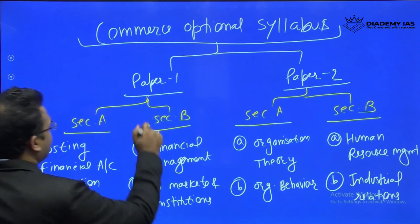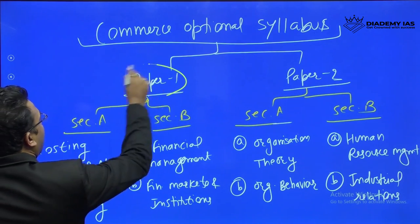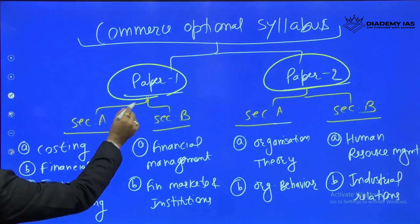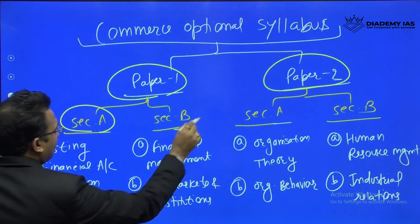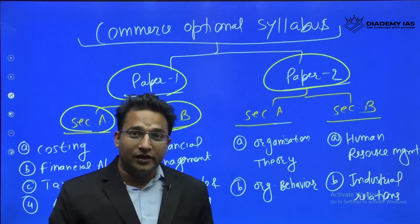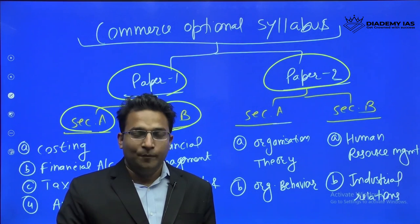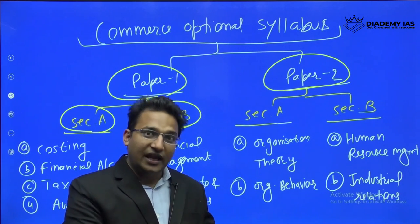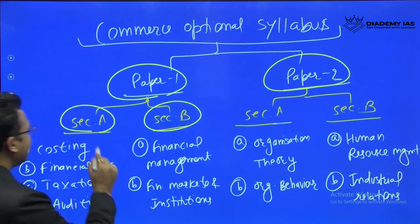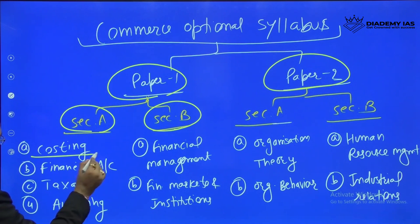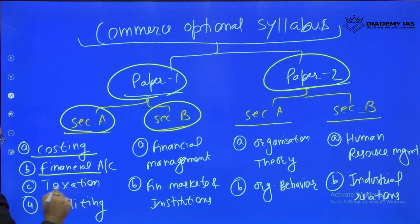Looking at the syllabus, there are Paper 1 and Paper 2. In Paper 1, we divide it into Section A and Section B — the question paper from UPSC will also have this classification. Section A has four subjects: first is Costing, second is Financial Accounting, third is Taxation, and fourth is Auditing.